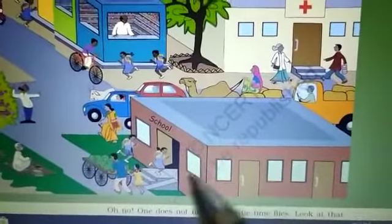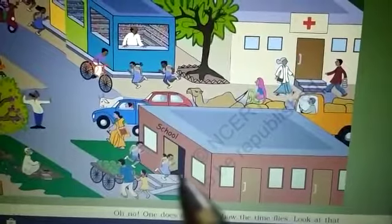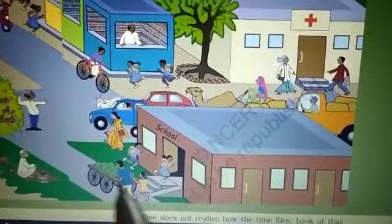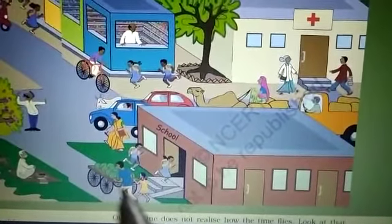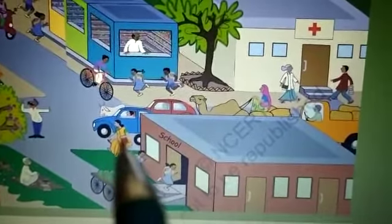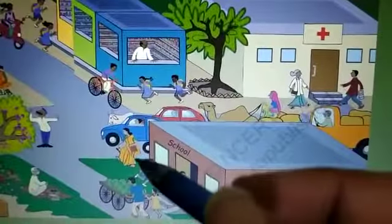Here is the school building. Some students are entering the school. A fruit seller is also here. Maybe she is a teacher — yes, she is a teacher.